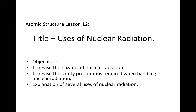This is Atomic Structure Lesson 12, GCSE Physics, on the Uses of Nuclear Radiation. The objectives are to revise the hazards of nuclear radiation, the safety precautions required when handling nuclear radiation, and explanations of several uses of nuclear radiation. You will have to pause this one quite a lot as there are a lot of notes to take and content to learn, but there are not too many complex questions - you'll just be expected to reiterate the content in an examination.